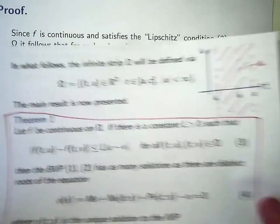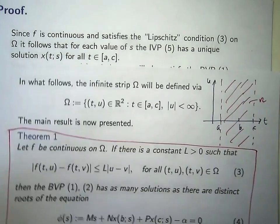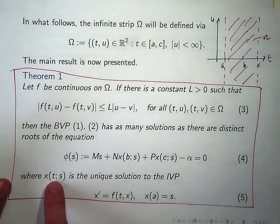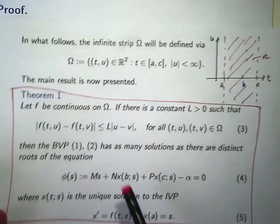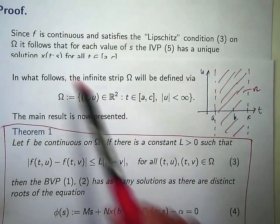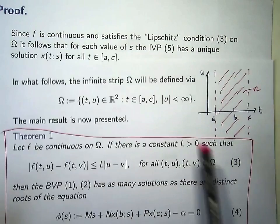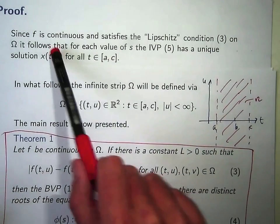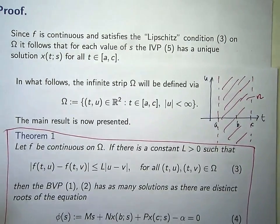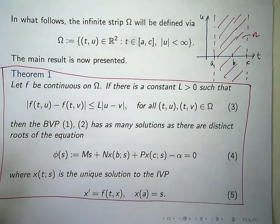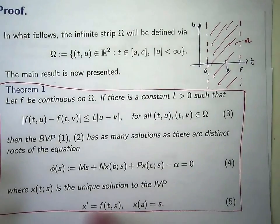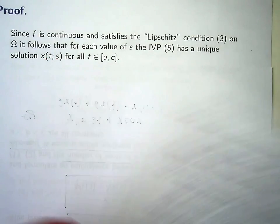So let's discuss the proof. First, let's discuss this point where x(t; s) is the unique solution to this problem here. Well, it's well known that if f, let's consider this problem for each s. Since f is continuous and satisfies this Lipschitz condition 3, it's well known that for each value of s this initial value problem has a unique solution for all t between a and c. That's a standard result that can be proved in a number of ways and any serious ODE text will have that result in it. So this problem for each s has a unique solution which we denote by this.